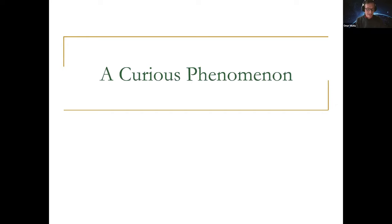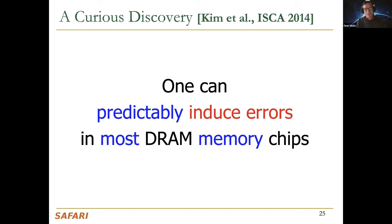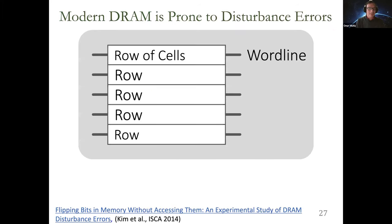While doing those retention studies, we became very interested in other error types in DRAM, especially read disturb errors. We had a similar infrastructure for flash memory and saw many read disturb errors there. So we asked: why don't you get read disturb errors in DRAM as well? Together with Intel, we investigated this possibility and found that you can predictably induce errors in most DRAM chips by inducing this read disturb phenomenon. This is called DRAM Rowhammer — a simple hardware failure mechanism that can create a widespread system security vulnerability. As long as you have a scaled memory technology, you're not going to be immune to read disturb.